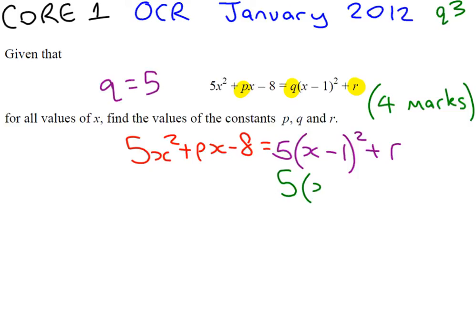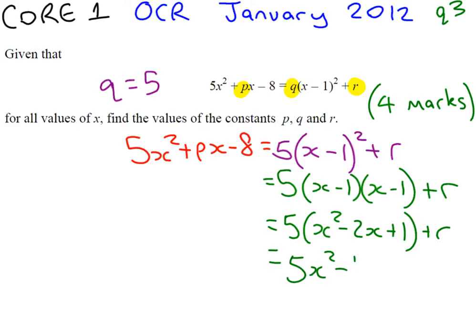We want to expand this bracket, which is going to give us 5 times x minus 1 times x minus 1 plus r, which expands to 5 times x squared minus 2x plus 1 plus r, which expands again to 5x squared minus 10x, and we're going to get plus 5 plus r.